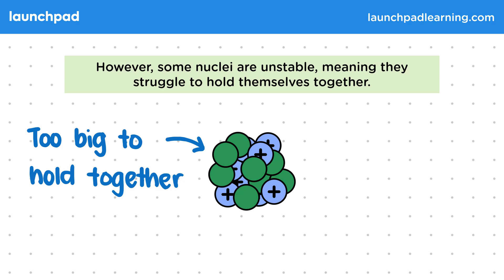Like, for example, if you were to try and hold loads of tennis balls in your hands at once. Large numbers of protons or neutrons can make a nucleus unstable, but you don't need to know the details of what makes a nucleus stable or unstable at GCSE.